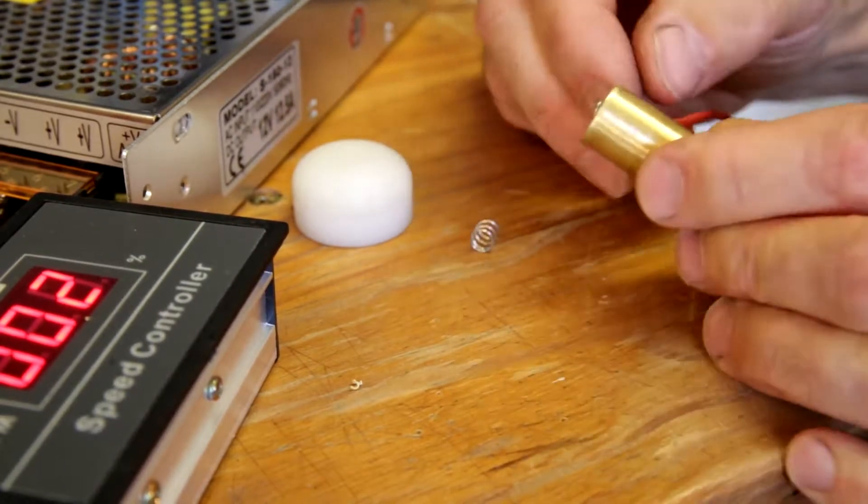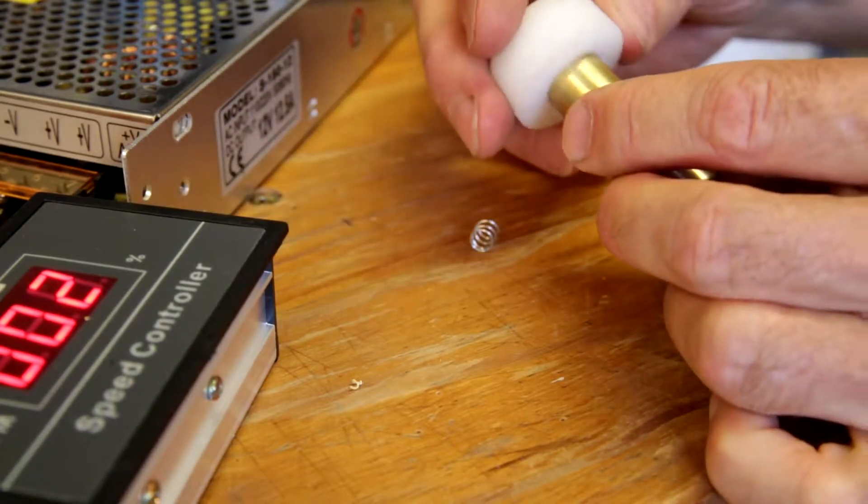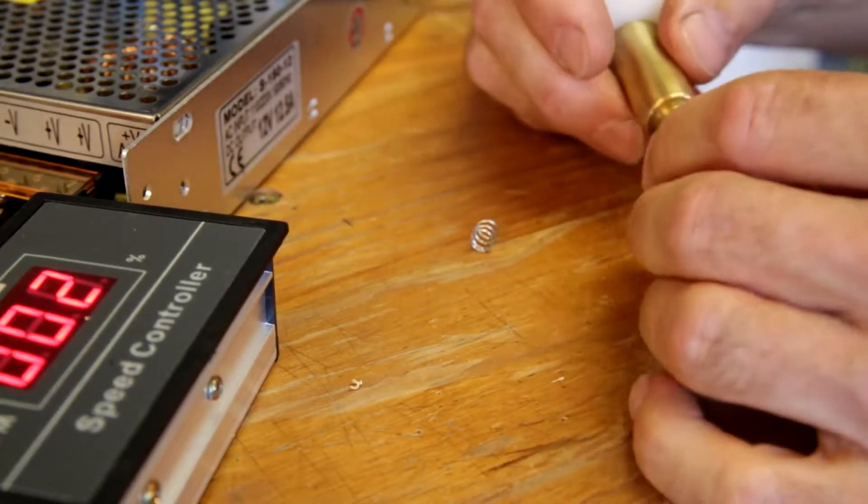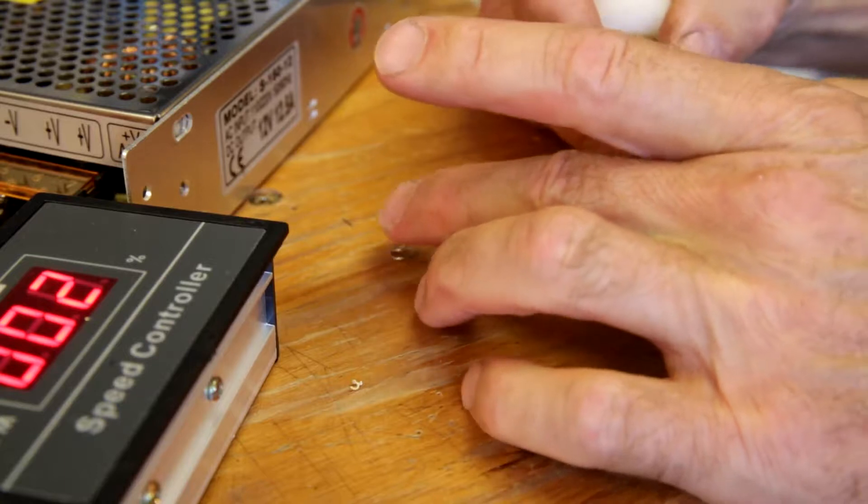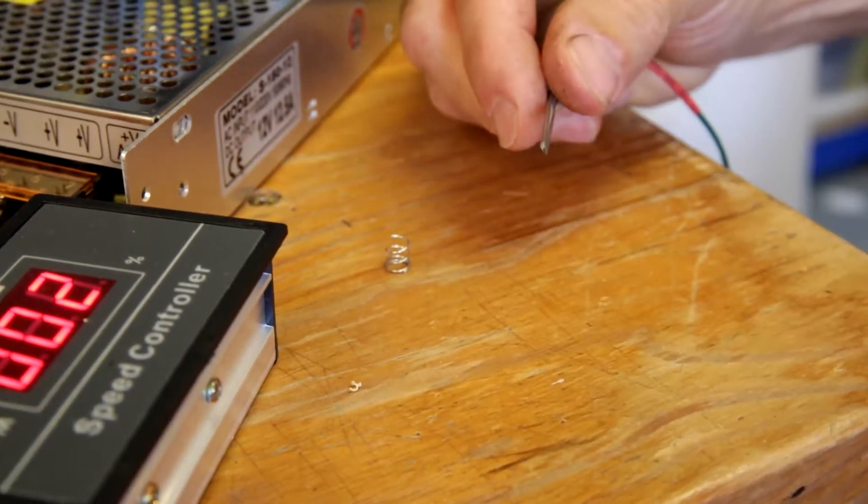I think that length which is just poking out is a good general purpose length. A slightly longer length spring might be useful for very fine detailed work.